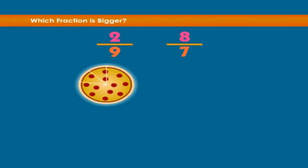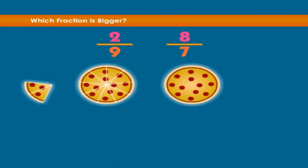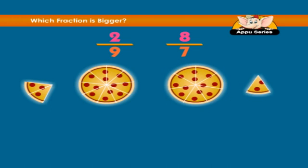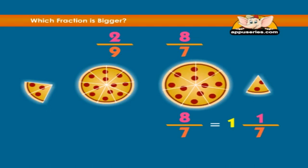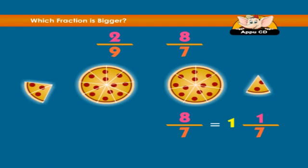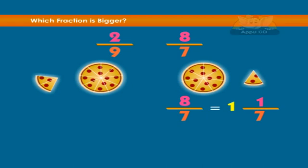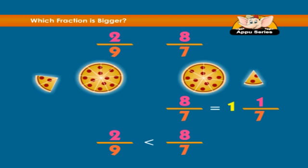Let's do another example: which is greater, two ninths or eight sevenths? Two ninths isn't very much pizza — only two pieces out of nine. But eight sevenths is more than a whole pizza, isn't it? In fact, it is one and one seventh — a whole pizza and another slice. So two ninths is lesser than eight sevenths, or we can say eight sevenths is greater than two ninths.